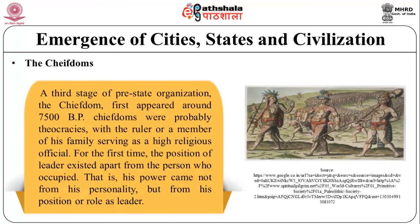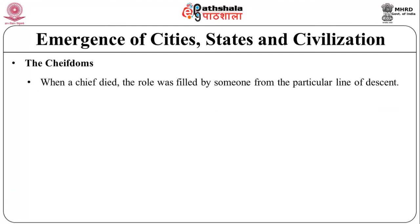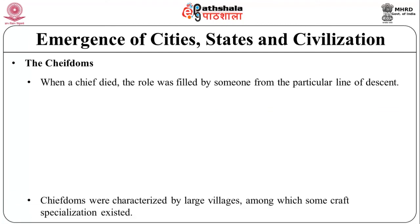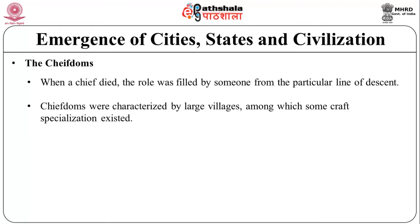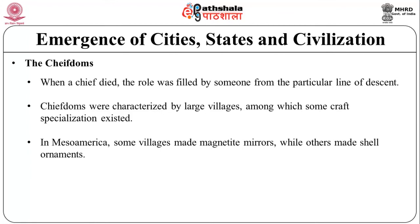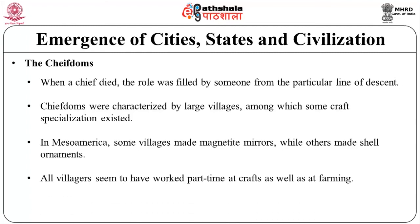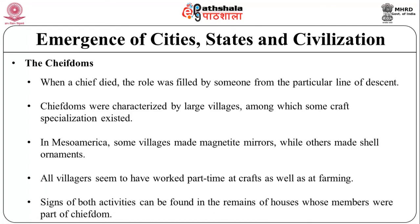The next stage is the chiefdom. A third stage of pre-state organization, the chiefdom, first appeared around 7500 BP. Chiefdoms were probably theocracies with their ruler or a member of his family serving as a high religious official. For the first time, the position of leader existed apart from the person who occupied it — power came not from personality but from position or role as a leader. When a chief died, the role was filled by someone from a particular line of descent. Chiefdoms were characterized by large villages among which some craft specialization existed. In Mesoamerica, some villages made magnetite mirrors while others made shell ornaments. All villages seem to have worked part-time at craft as well as at farming.